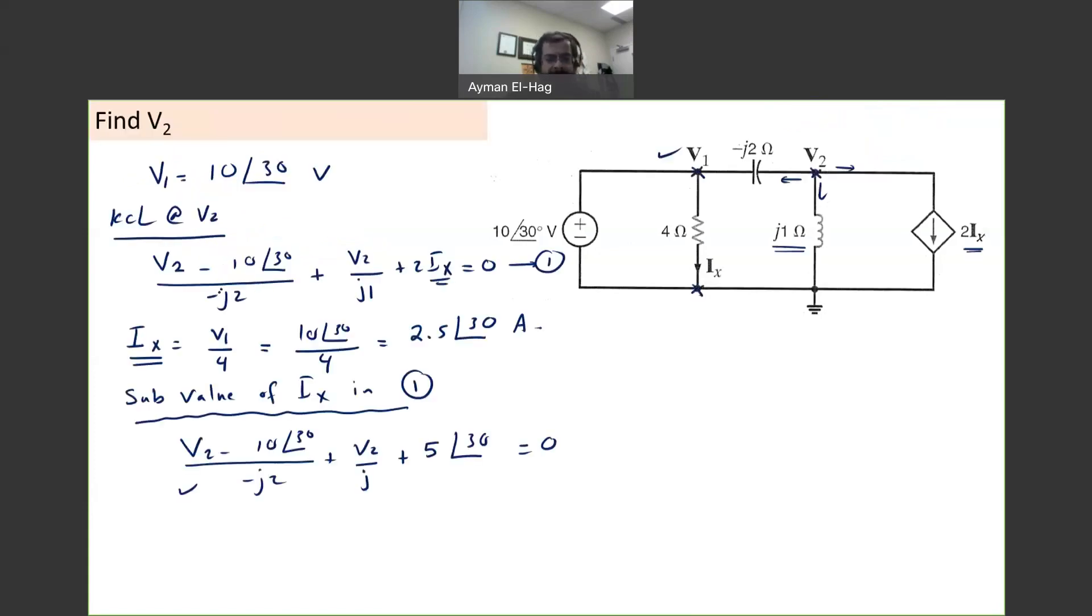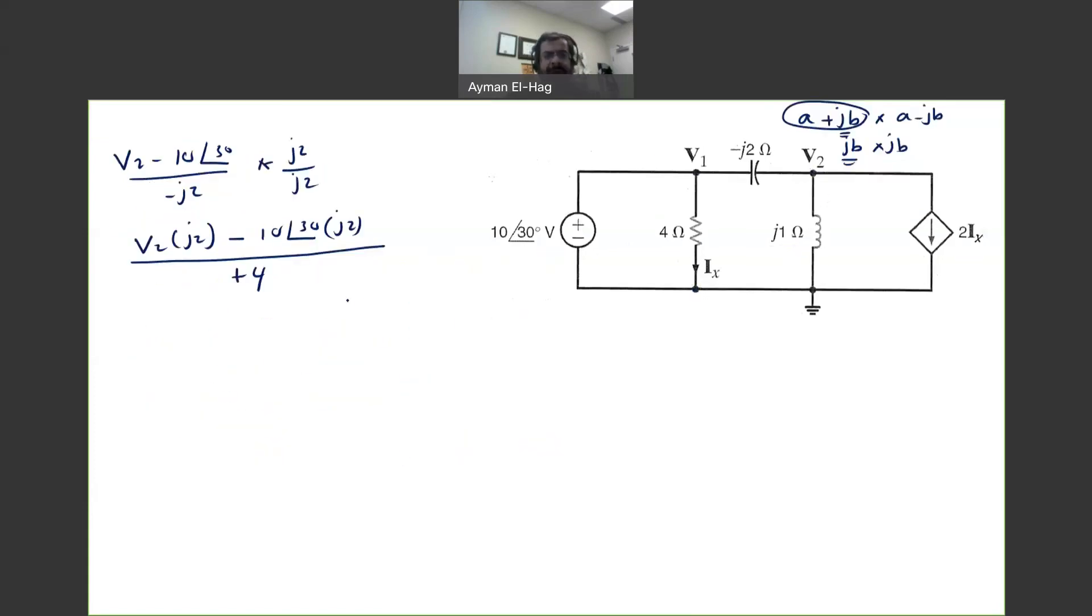Then we will have the other term, which is V2 over j1. So V2 over j1, I multiply by j over j. So this becomes equal to V2 times j divided by -1. J times j is j square -1. So this is equal to -V2 times j.